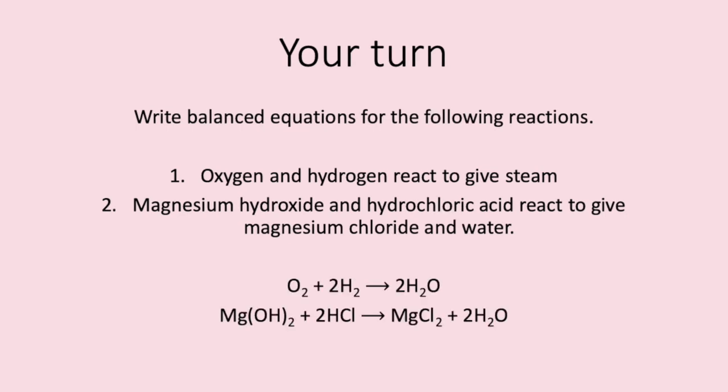Number 1. Oxygen plus hydrogen react to give steam. Firstly we write out the symbols. O2 plus H2 goes to H2O. Oxygen and hydrogen exist as diatomic molecules. If we look at the right hand side of the equation we've got one oxygen and on the left we've got two. I therefore put a two in front of the H2O. But that gives us four hydrogens and on the left hand side we only have two. Therefore I put a two in front of the H2. This gives us two oxygens on each side and four hydrogens.